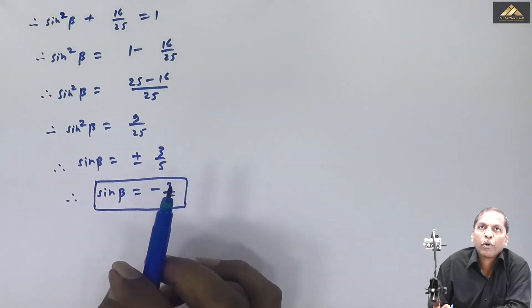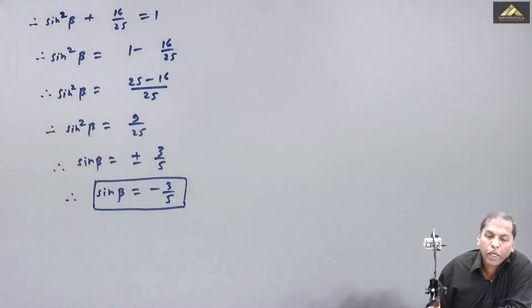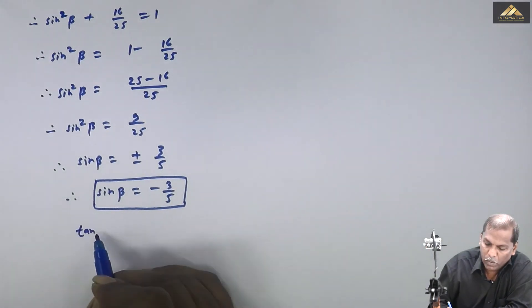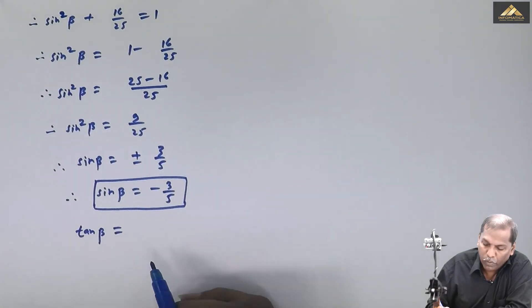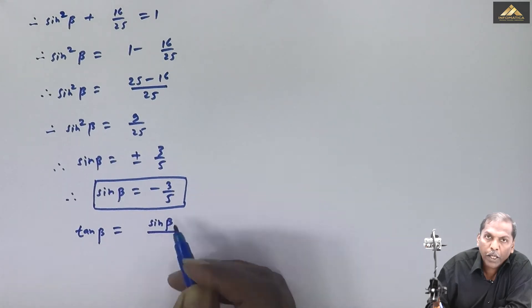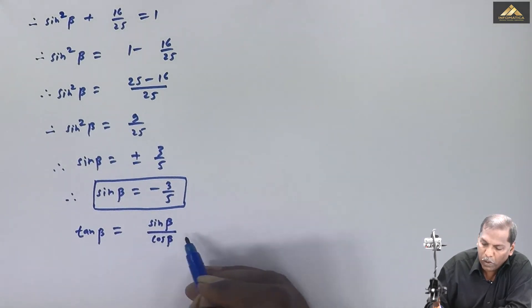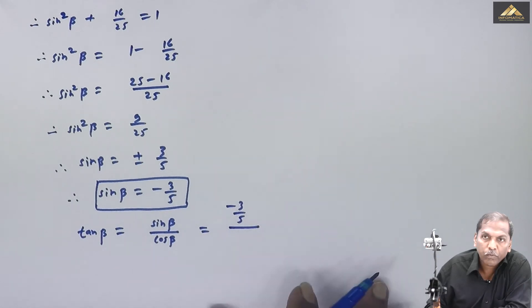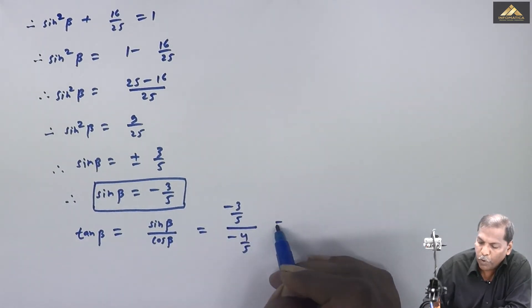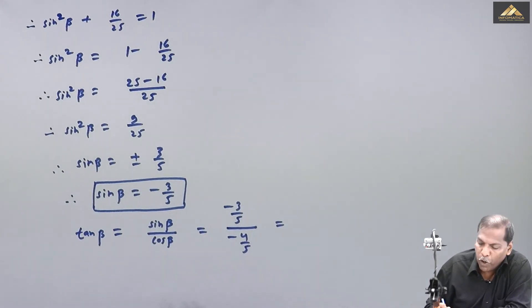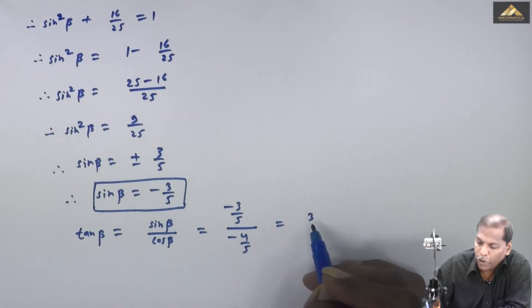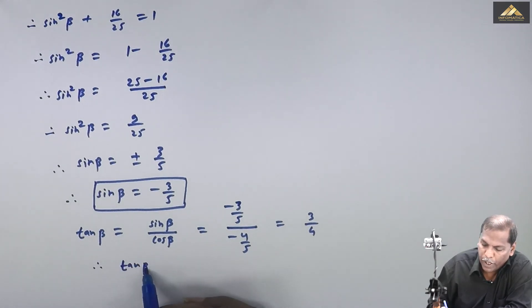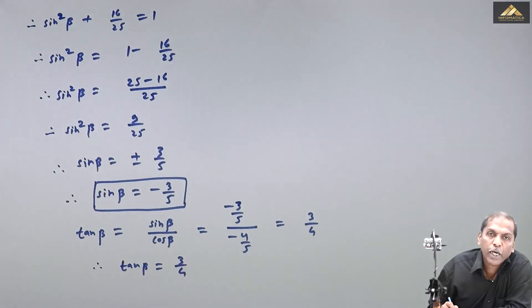Now we have both cos β and sin β. Using these two values we can find tan β. So tan β = sin β / cos β = (-3/5) / (-4/5). The 5 cancels from the denominator and the two negative signs cancel, leaving tan β = 3/4.